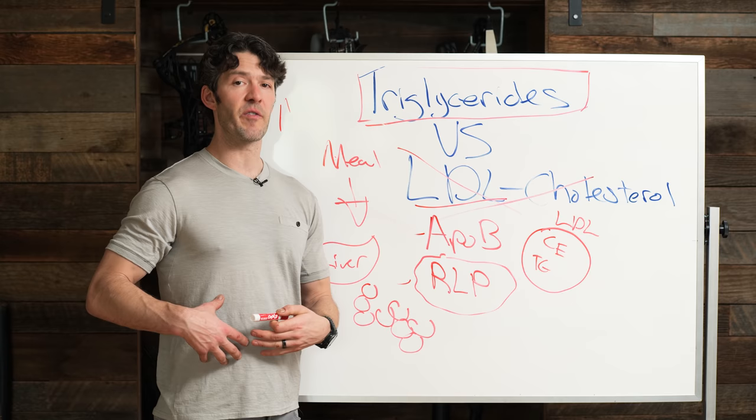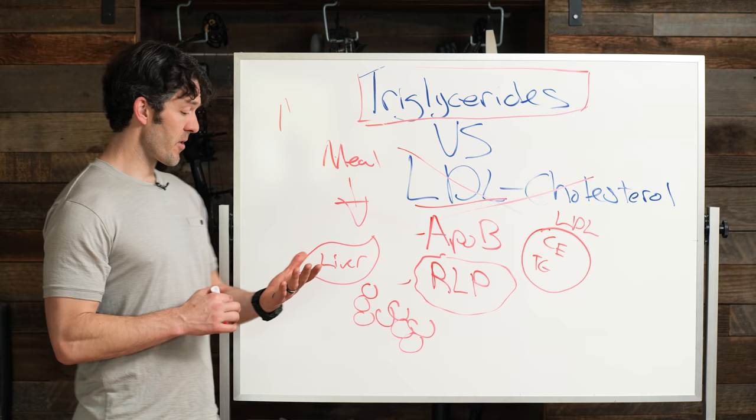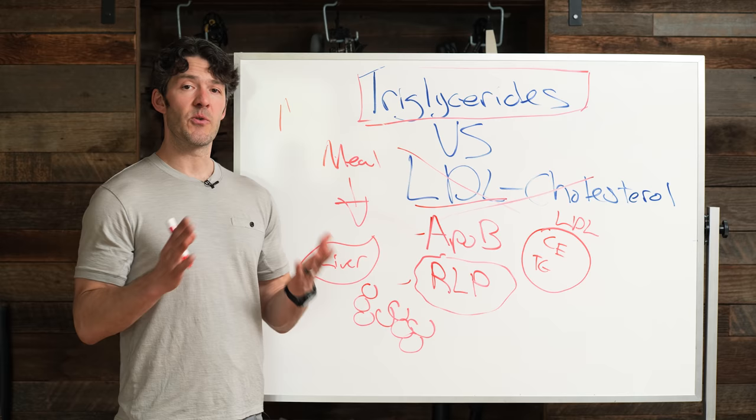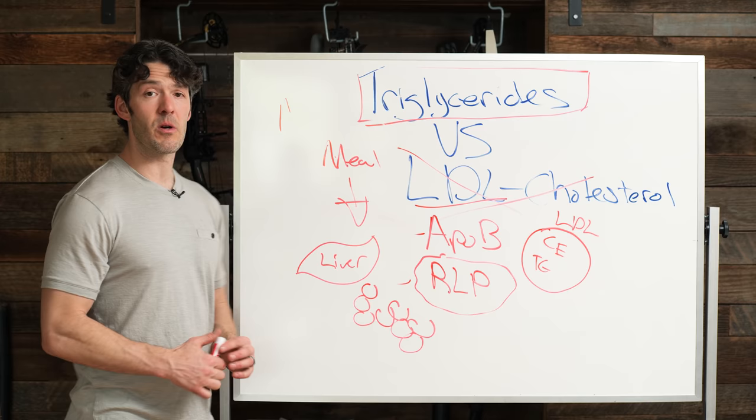So those are the things. Lower your carbs, exercise more, make sure you're balancing your stress and circadian rhythms, getting cold on purpose, and then periodic feeding, window compression, and fasting is a phenomenal way to improve cardiometabolic health and reduce this post-meal atherosclerosis that is so common, leading to premature death from heart disease and stroke.